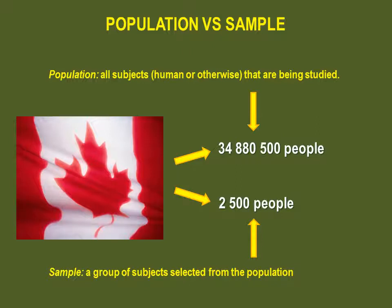When selecting a sample, you have to make sure it is actually a true reflection of your population. If your sample was comprised of people that only come from downtown Toronto, it's fair to say that it doesn't truly reflect the diversity of the Canadian population. To make sure your sample is representative of your population, you must use one of four sampling strategies.